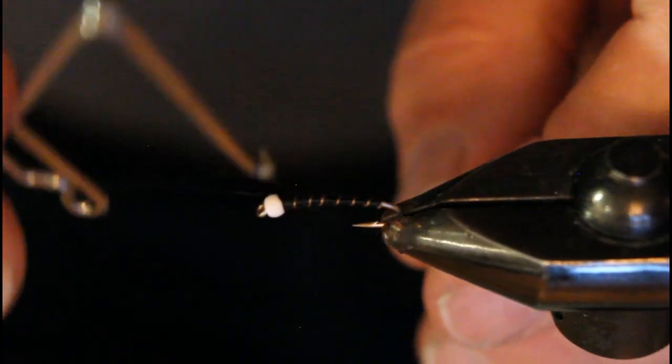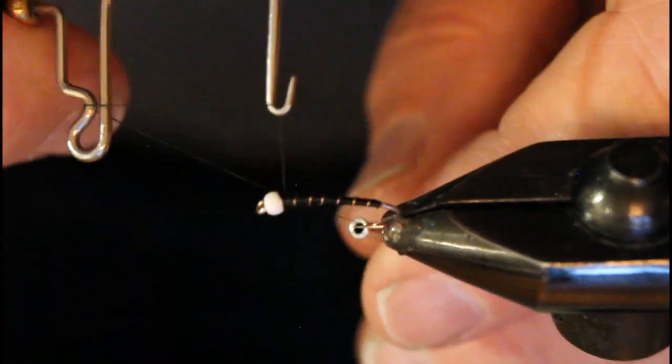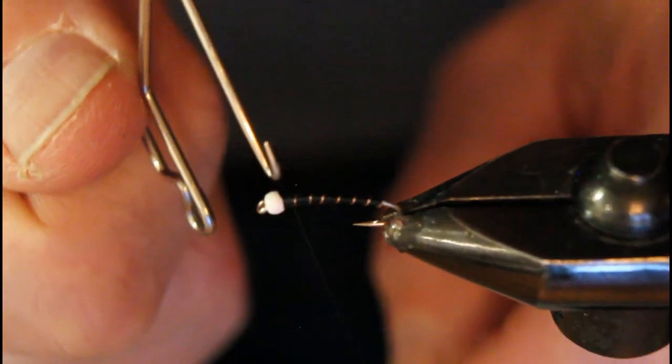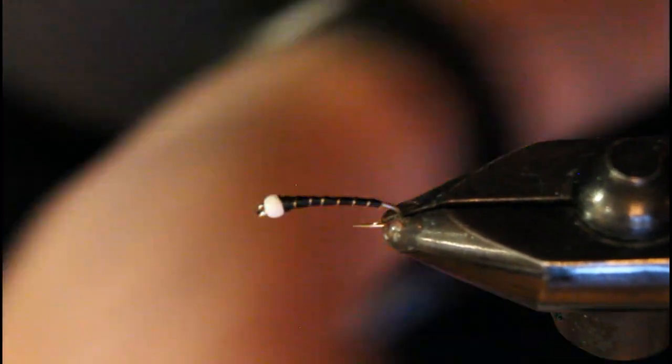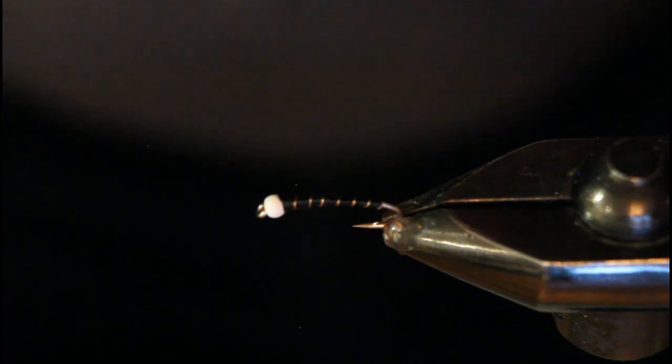You've got one of the simplest chironomids you're ever going to tie. As you can see, this didn't take very long. I can tie over a dozen, close to two dozen, in an hour and have my fly box fully stocked.